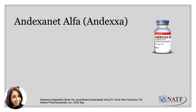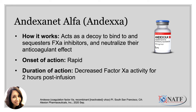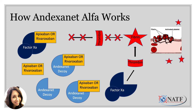Now let's discuss andexanet alfa in a little more detail. As we said, it acts as a decoy to bind to and sequester factor Xa inhibitors, neutralizing their anticoagulant effect. It works rapidly, and the effects on factor Xa were seen to last for up to about two hours after the infusion. The andexanet molecules are made to look like factor Xa, but are missing a side chain that would allow them to activate. So when andexanet is given, it provides your anticoagulant with a neutral alternative site to bind to, leaving factor Xa free to produce thrombin and fibrin that would ultimately help restore hemostasis.